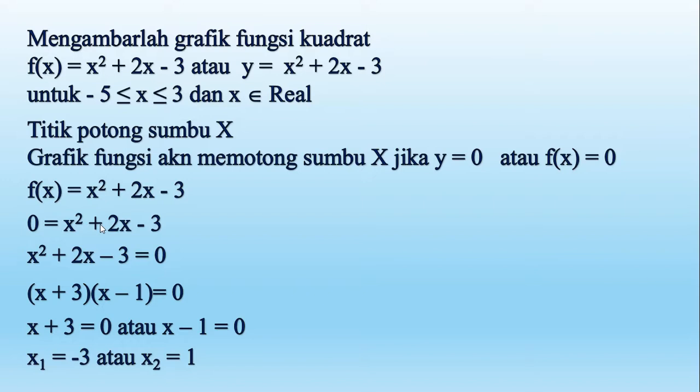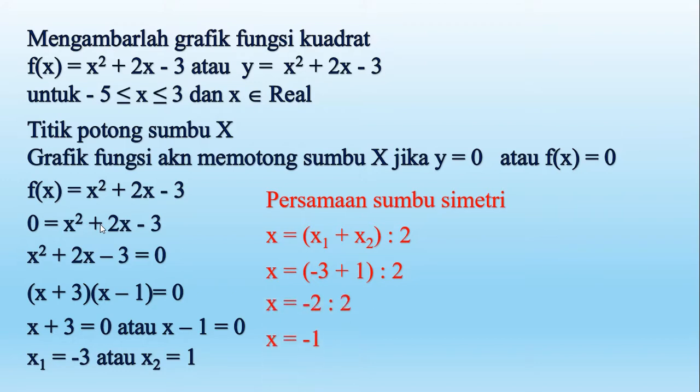Coba kita lihat, nah berarti x1 nya negatif 3, x2 nya 1. Nah kita akan mencari sumbu simetri, persamaan sumbu simetri itu berarti kita tinggal menjumlahkan nilai x1 ditambah nilai x2 kemudian dibagi 2. Ya persamaan garisnya adalah x sama dengan (x1 + x2)/2. Berarti negatif 3 ditambah 1 dibagi 2, negatif 3 ditambah 1 yaitu negatif 2, negatif 2 dibagi 2 yaitu negatif 1. Jadi persamaan sumbu simetrinya adalah x sama dengan negatif 1.